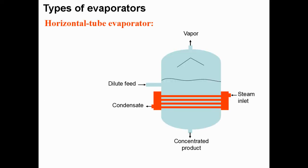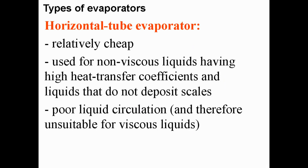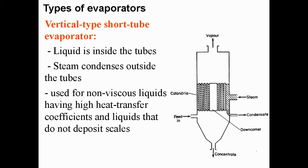Another type is the horizontal tube evaporator. Its advantages are that it is relatively cheap, used for non-viscous liquids having high heat transfer coefficient, and suitable for liquids that don't deposit scales.